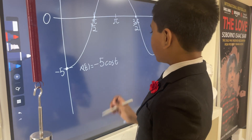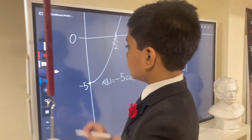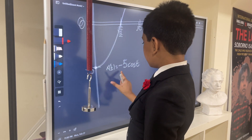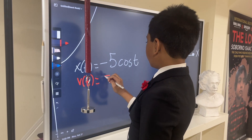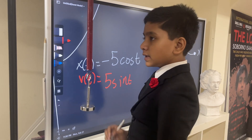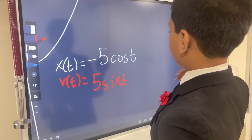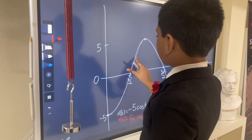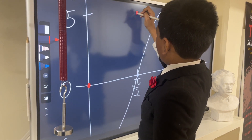x of t is minus five cosine t. Now to find v of t, we're going to take the derivative of that. The derivative is going to be five sine t — the derivative of cosine is negative sine, so negative times negative becomes positive. So v of t equals five sine t.